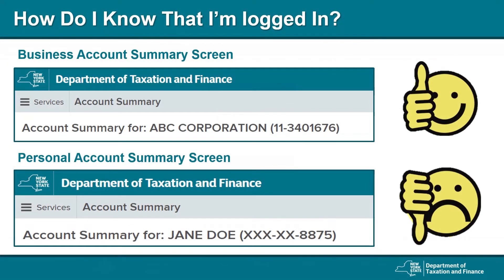How do you know you are logged in? You want to make sure you are creating and logging into a business online services account and not a personal account. You can verify that you are in the correct account by looking at the name and ID number in the parentheses of your account summary page. As you can see in the example, it states ABC Corporation. A business account will show your legal business name — which for a sole proprietor will be your personal name — followed by your taxpayer ID for that business. A personal account will show your social security number and you won't have access to the sales tax web file options.